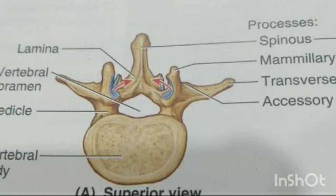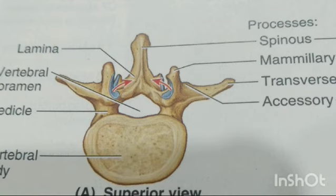Lumbar vertebrae have massive bodies accounting for much of the thickness of the lower trunk. In the median plane, their articular processes extend vertically with articular facets sagittally oriented initially. The L5 to S1 facets are distinctly coronal in orientation. In the more sagittally oriented superior joint, the laterally facing facet of the inferior articular process of the vertebra above is gripped by the medially facing facet of the superior processes of the vertebra below, facilitating flexion and extension and allowing lateral flexion but prohibiting rotation.